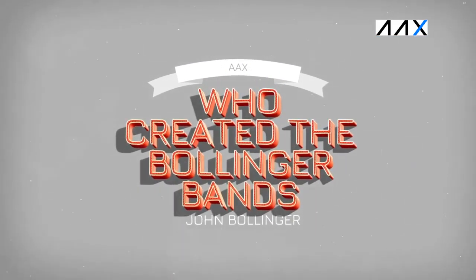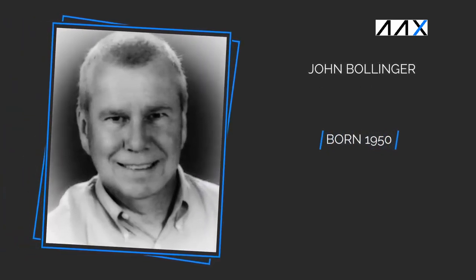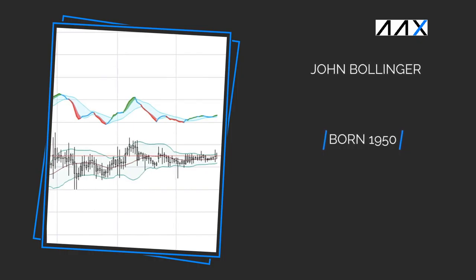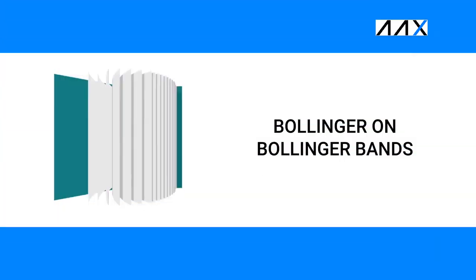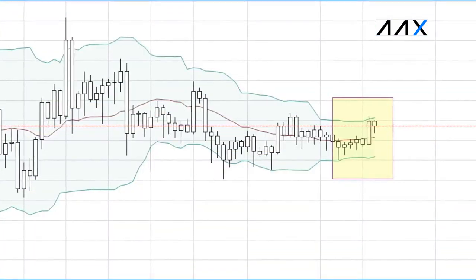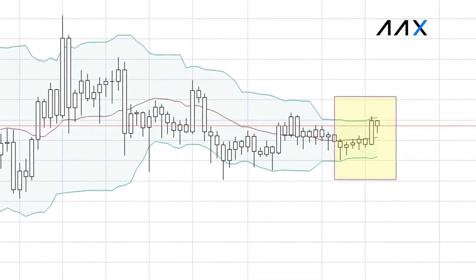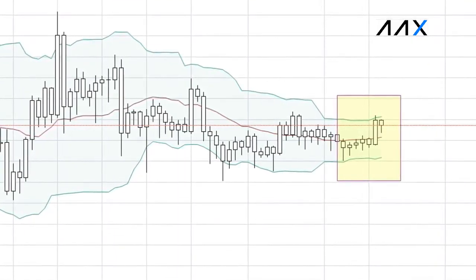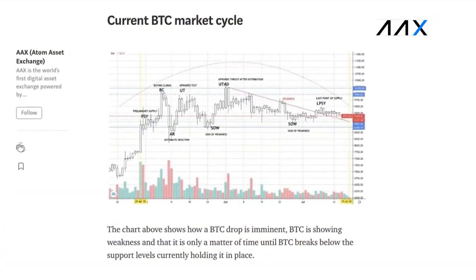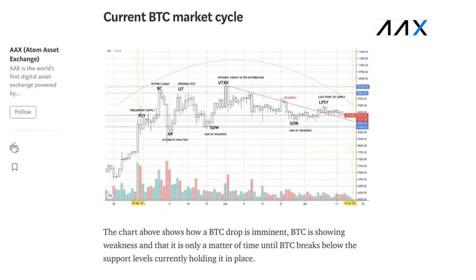So who created the Bollinger Bands? John Bollinger, an American citizen who was born in 1950, created the Bollinger Bands in the 1980s. John Bollinger is a financial analyst and has written a book on his indicator called Bollinger on Bollinger Bands. John regularly posts analysis on his Twitter and is somewhat concerned about Bitcoin's recent rally if it fails to push above the top band. If you'd like to see more technical analysis on Bitcoin, check out the recent AAX Wyckoff analysis on BTC.